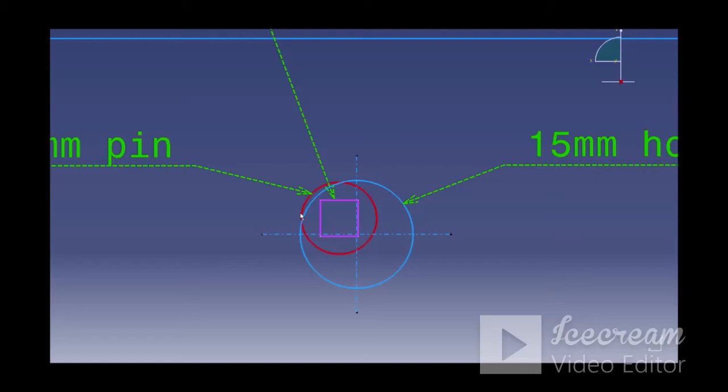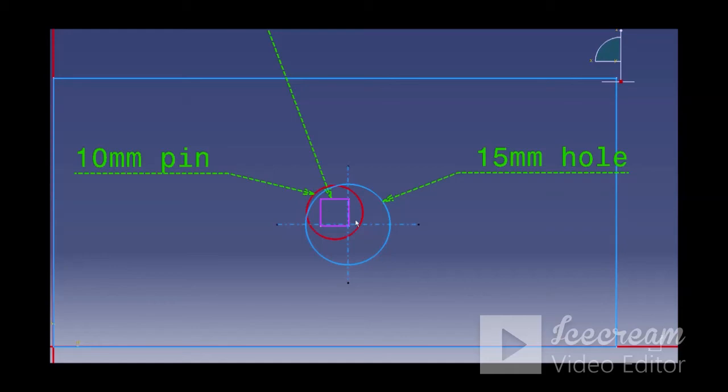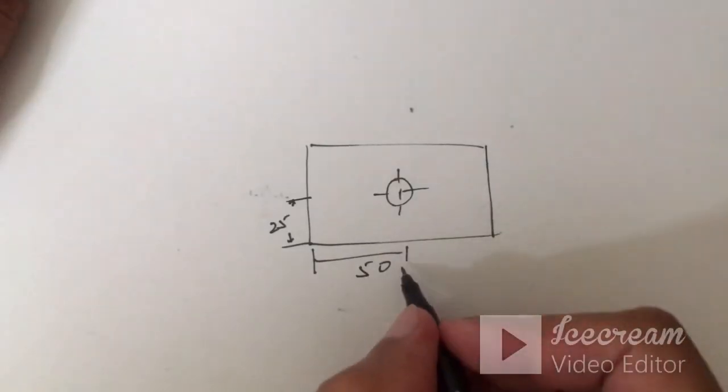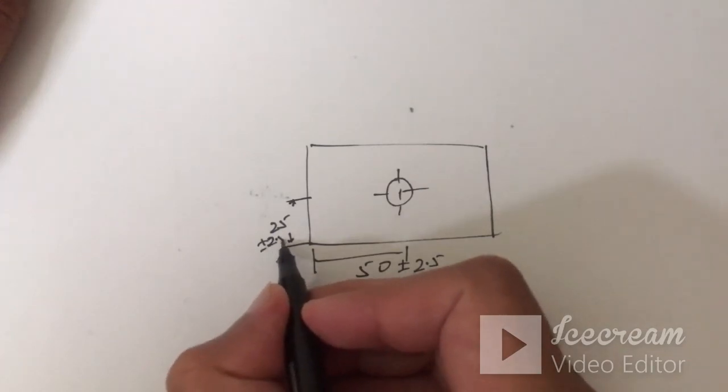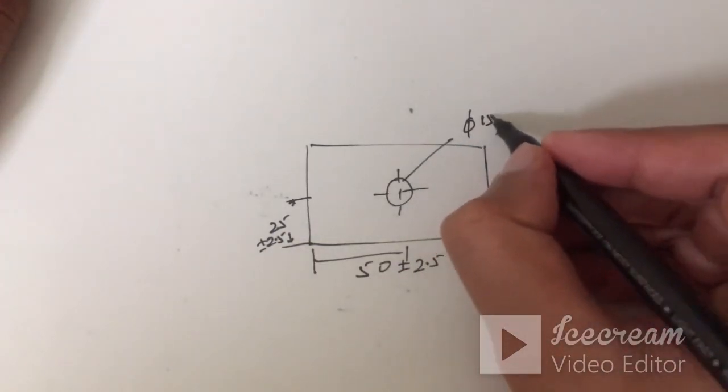So this is one of the drawbacks with plus and minus tolerancing and we will try to remove such conflicts in GD&T. So instead of putting plus and minus tolerance on these dimensions, what we will do is we will define a tolerance on the hole itself.